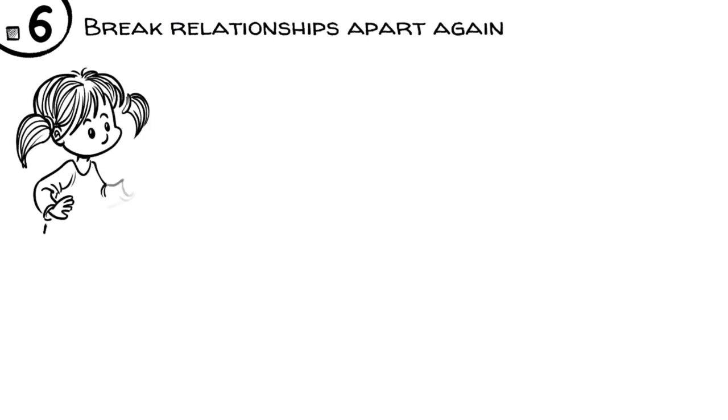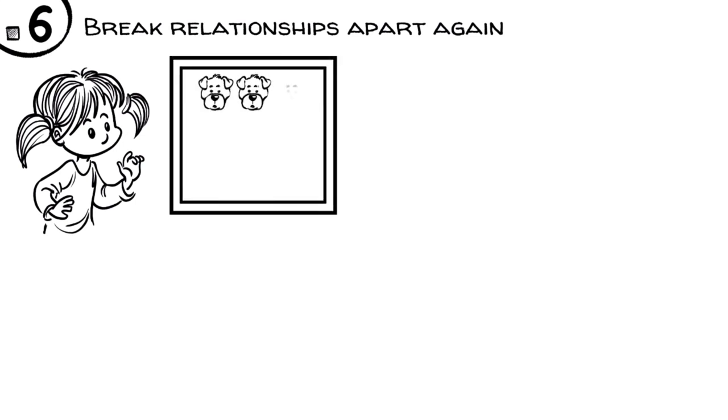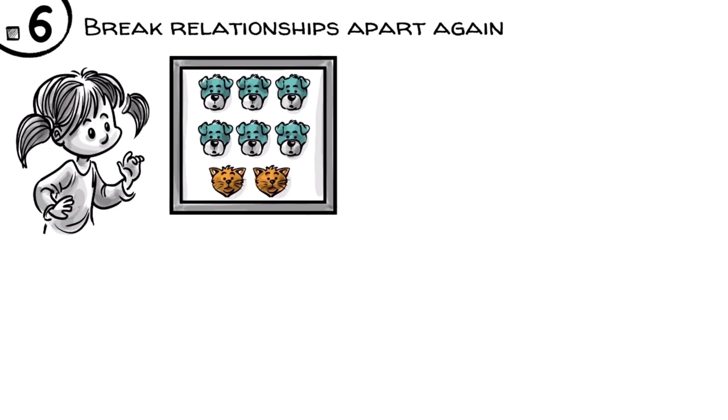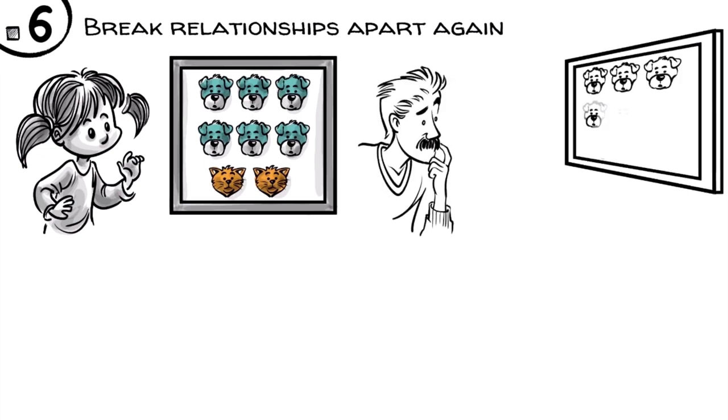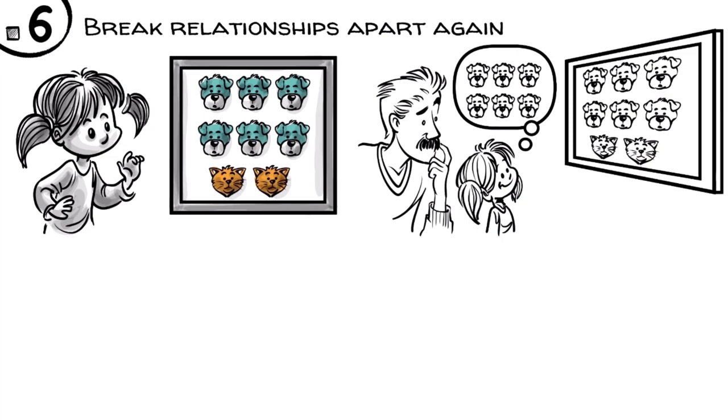After building them, children need to learn to break relationships apart again. We can see how hard this is when we present a five-year-old an image of six dogs and two cats, and then ask: are there more dogs or more animals? While most adults who see the full picture find this question odd, a five-year-old typically just answers: more dogs.